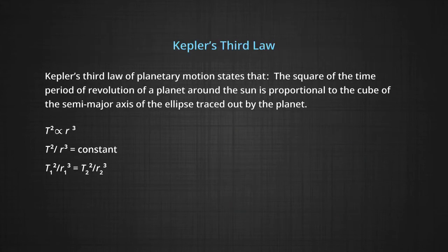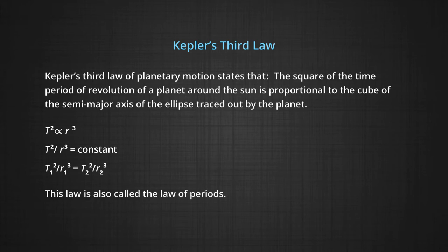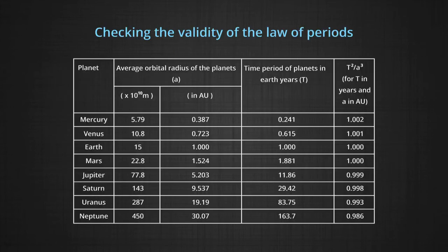Kepler's third law of planetary motion states that the square of the time period of revolution is proportional to the cube of the semi-major axis of the ellipse traced out by the planet. This law is also called the law of periods. In this table we check the validity of Kepler's law of periods for all the planets of the solar system.